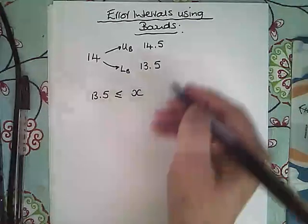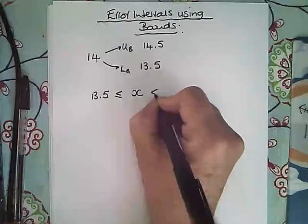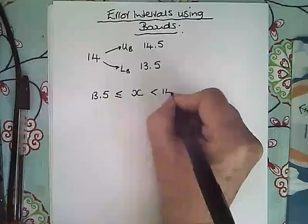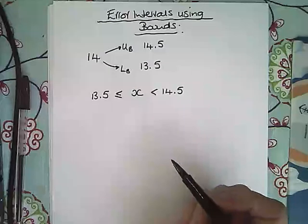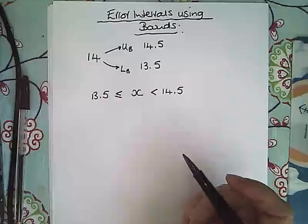When it goes up to the upper bound, it can't take that value, 14.5, because if we were to round that to two significant figures, 14.5 would round to 15.